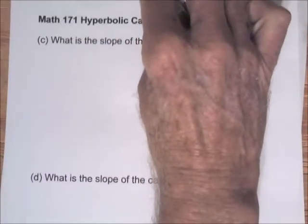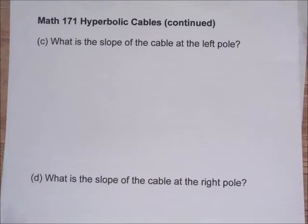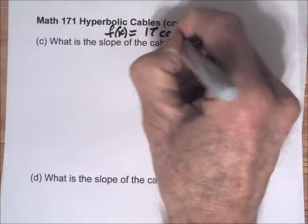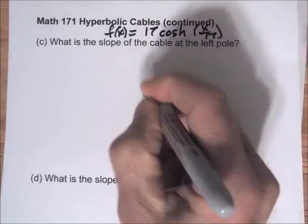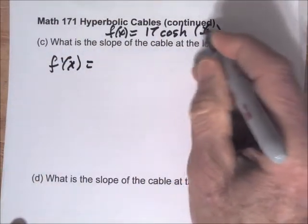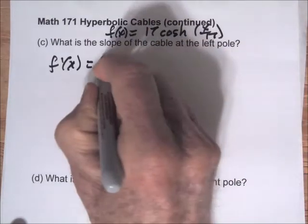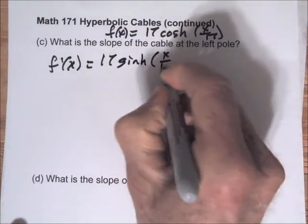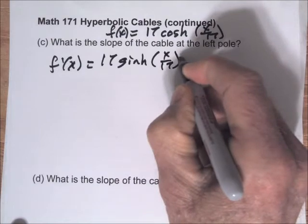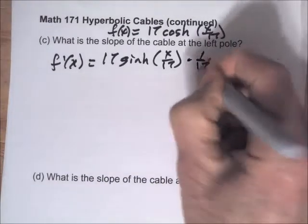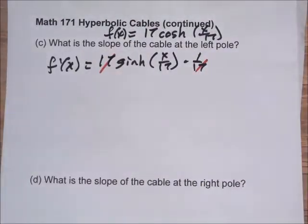Now the slope of the cable at the left pole — for that we need the derivative. So again, f(x) is 17 cosh of x over 17. If we take f prime of x, this is a composite function, so we'll have to use the chain rule. The outside function is cosh, so we'll have 17 times the derivative of cosh, which is sinh of x over 17, times the derivative of the inside. The derivative of x over 17 is 1 over 17, so the 17s cancel and f prime of x equals sinh of x over 17.